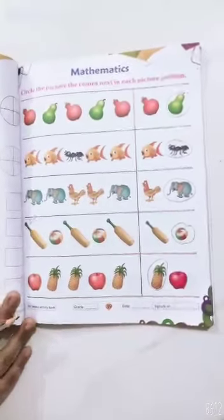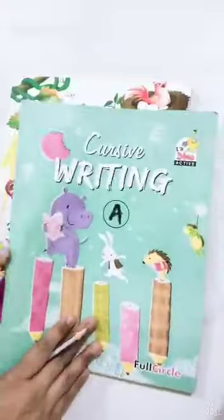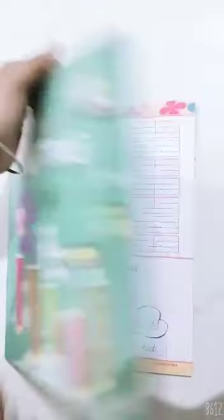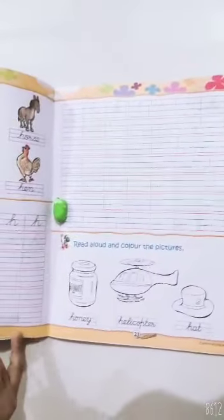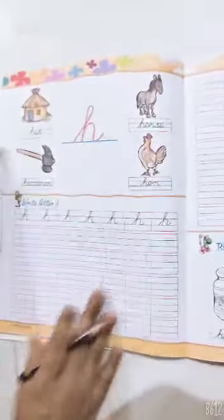Now close your book. Open your book, English handwriting book. This is your English handwriting book. Open it. Page number 22. Up to 21, all of you have completed.